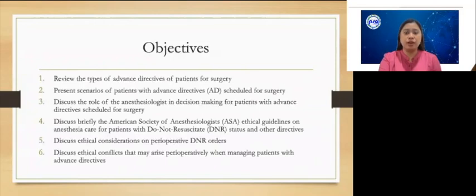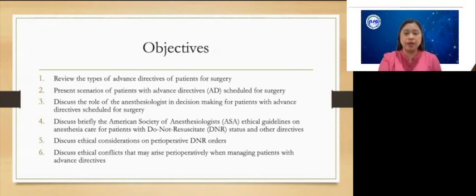The objectives of this lecture are the following: to review the types of advanced directives and present scenarios of patients with advanced directives scheduled for surgery; to discuss the role of the anesthesiologist in decision-making for patients with advanced directives scheduled for surgery; to discuss briefly the American Society of Anesthesiologists' ethical guidelines on anesthesia care for patients with do-not-resuscitate status and other directives; to discuss the ethical considerations on perioperative DNR orders; and lastly, to discuss the ethical conflicts that may arise perioperatively when managing patients with advanced directives.